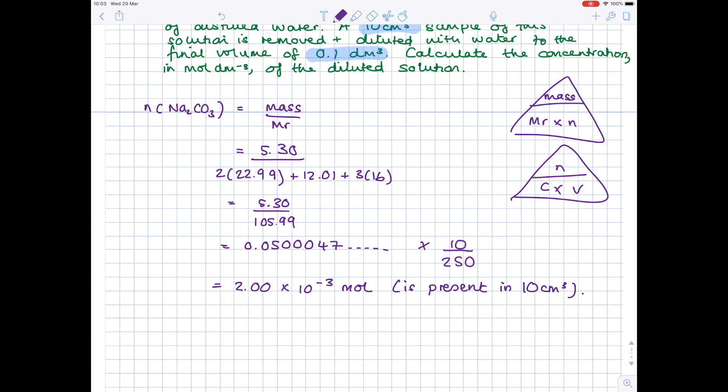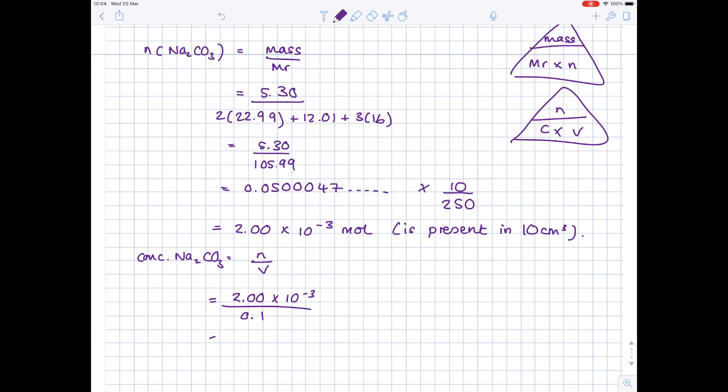And finally, we can read in the question that it was diluted with water to the final volume of 0.1 decimetres cubed. And so we're going to work out that concentration by doing a number of moles divided by volume. So we've got our number of moles. We've just calculated it as being 2 times 10⁻³. Our volume is the very final part of that question. So that's 0.1 decimetres cubed. The units are in decimetres cubed already. And you get a value which is 0.0200 moles dm⁻³. And that is done.